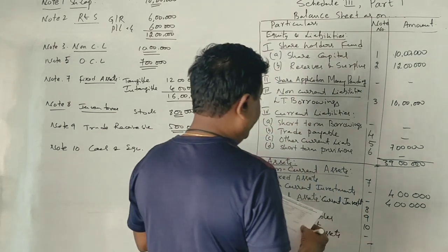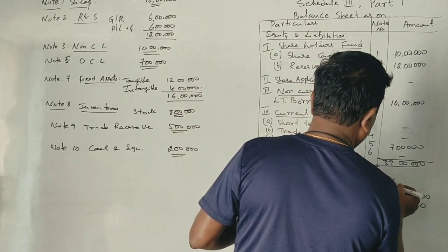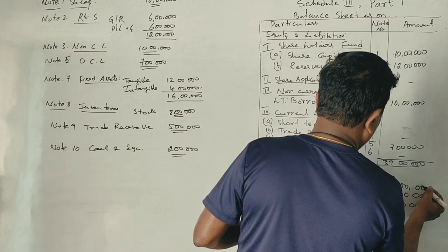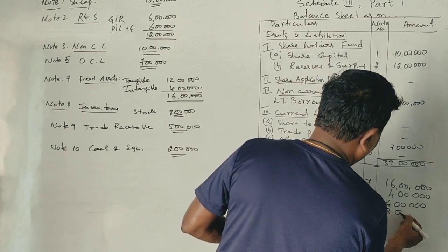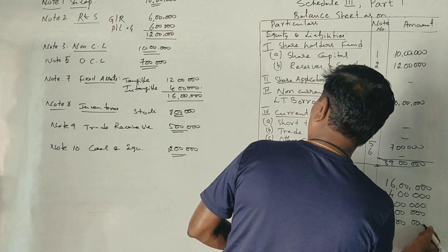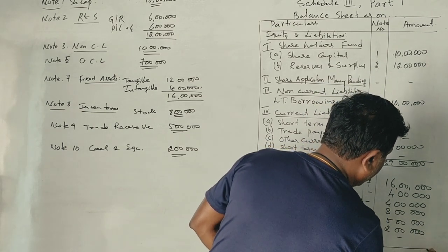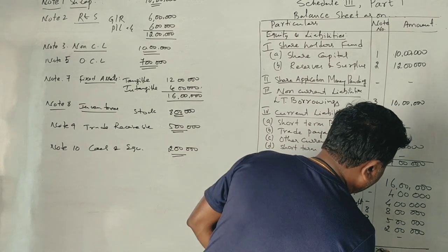16 lakhs, 8 lakhs, 5 lakhs, and 2 lakhs, 2 lakhs - 39 lakhs total.